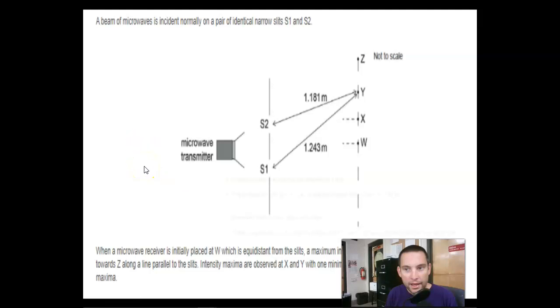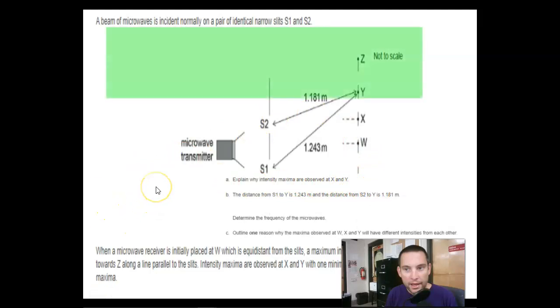Okay. So, questions. Explain why intensity maxima are observed at X and Y. Let's start there. In-phase waves meet and create constructive interference. The distance from S1 to Y is 1.23, and the distance from S2 to Y is 1.81. Determine the frequency of the microwaves.